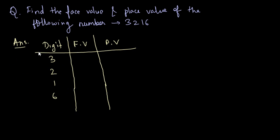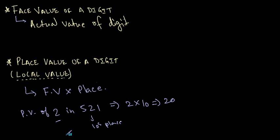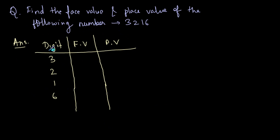To understand this concept more clearly, let's solve this problem: find the face value and place value of the digits in the number 3216. The face value of any digit is simply its actual value. So for 3216, the face value of 3 is 3, the face value of 2 is 2, the face value of 1 is 1, and the face value of 6 is 6.